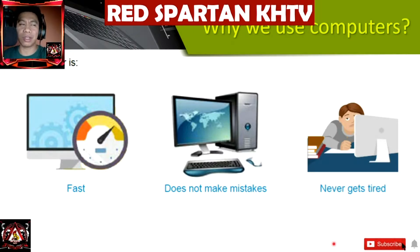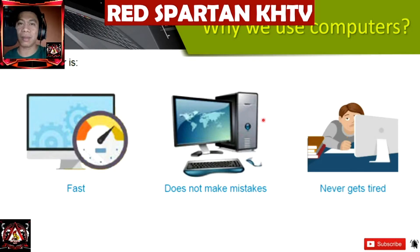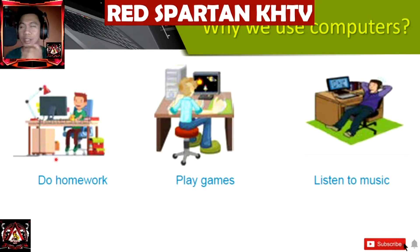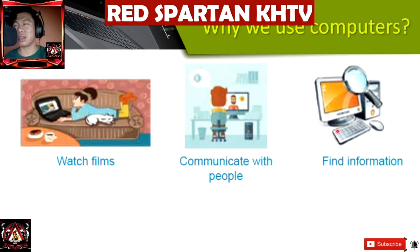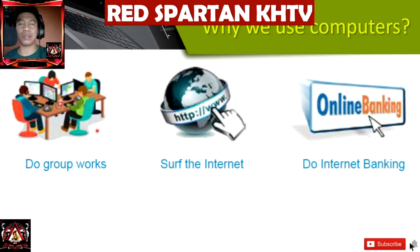Why do we use computers? A computer is fast, it does not make mistakes unless we make mistakes on inputting, and it never gets tired. Computers help us do homework, play games, listen to music, watch films or movies, communicate with people through chat or video calls, find information through Google or the internet, do group work online, surf the internet, and do online or internet banking.